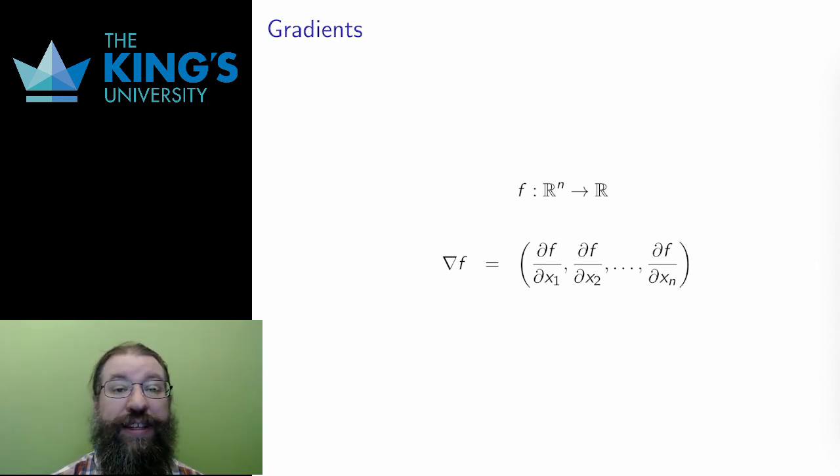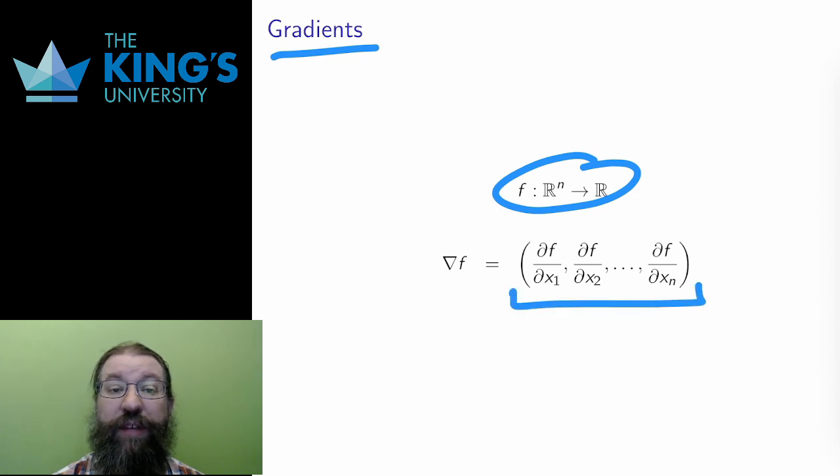The first idea is the gradient. In a field that depends on n variables, there are n partial derivatives. But if there are n partial derivatives, I can make a vector of them, which will be a vector in R^n, that is, in the domain. This is called the gradient vector of the scalar field.